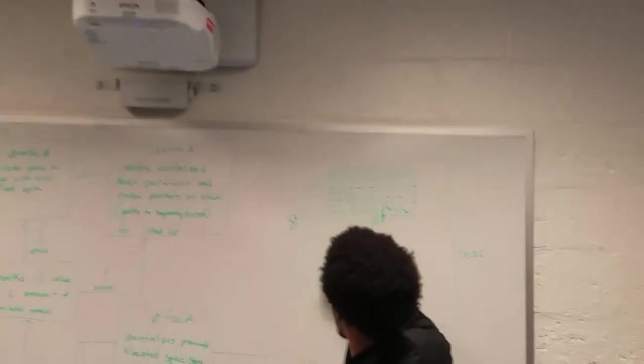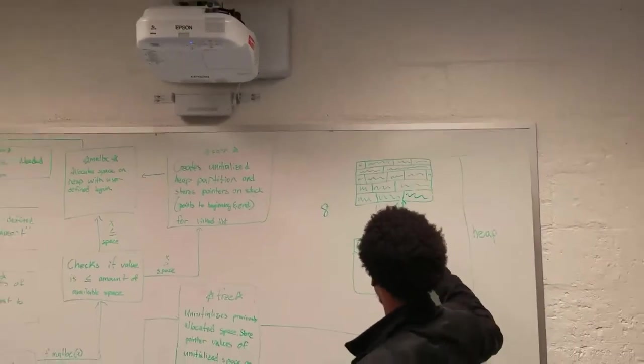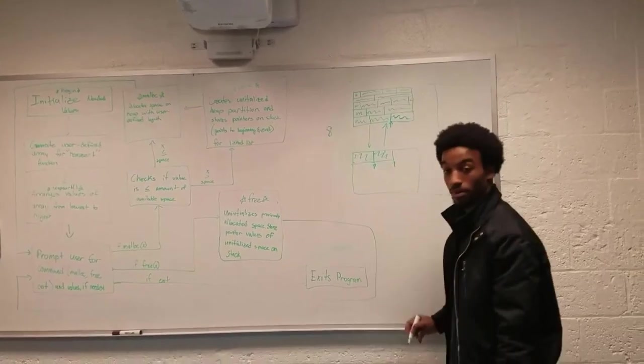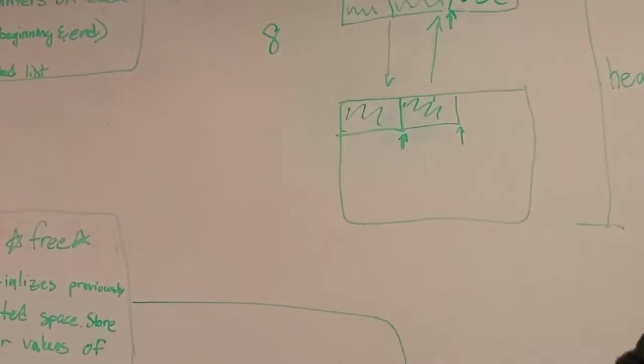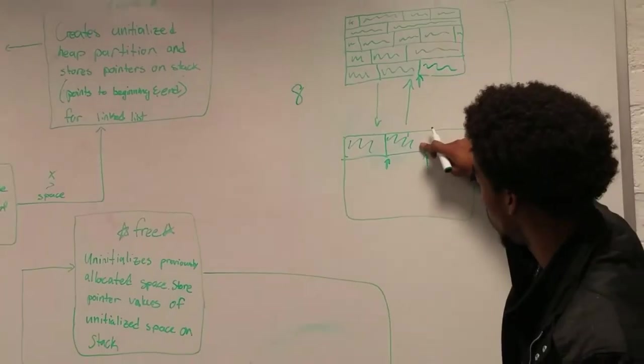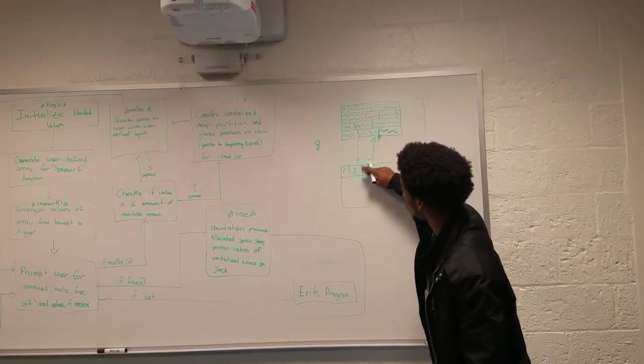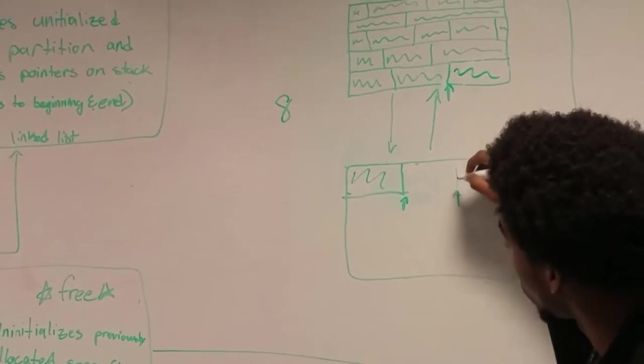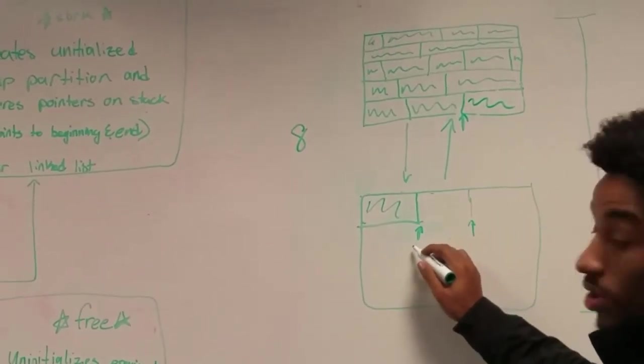This was the last space. We still have the beginning and pointers right here, so what free would do is just come and uninitialize all of this. But it would keep the pointers here and here, and throw these onto the stack, knowing that this space is unallocated.